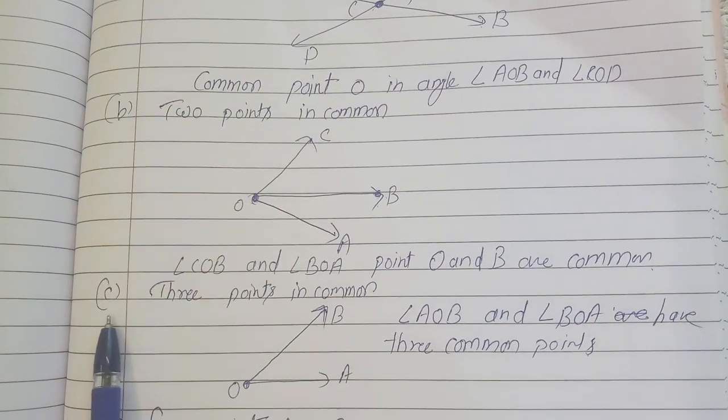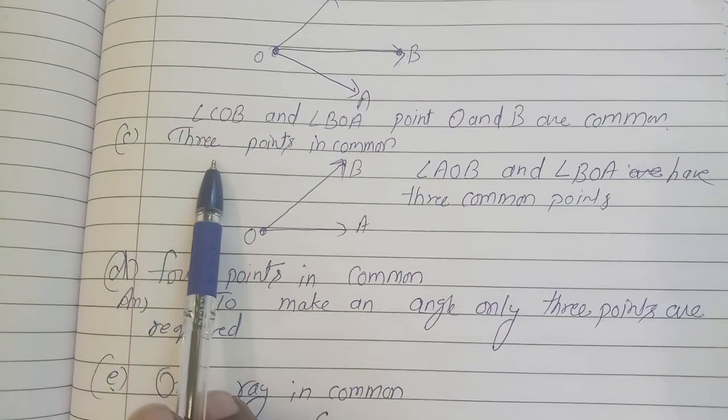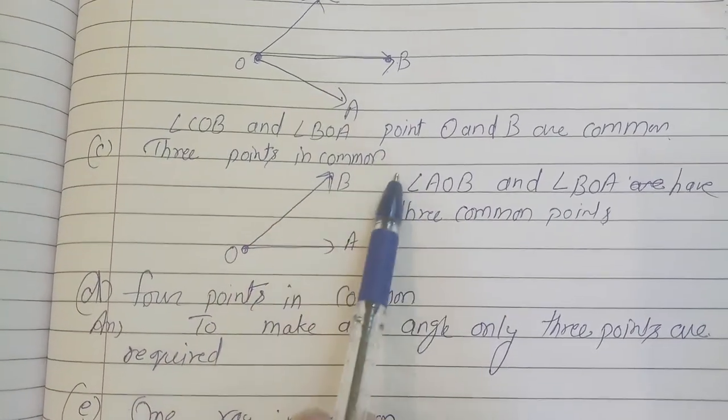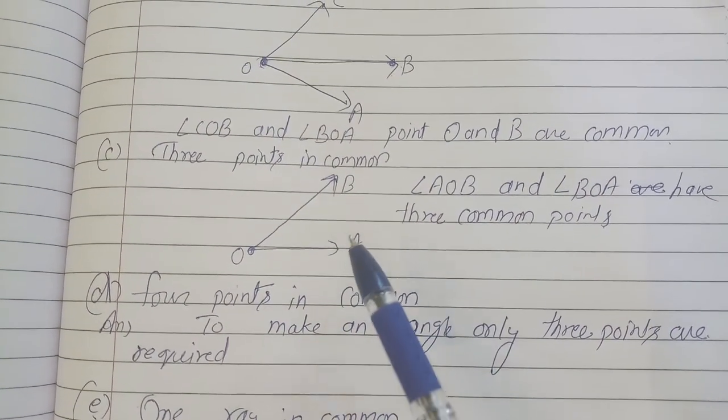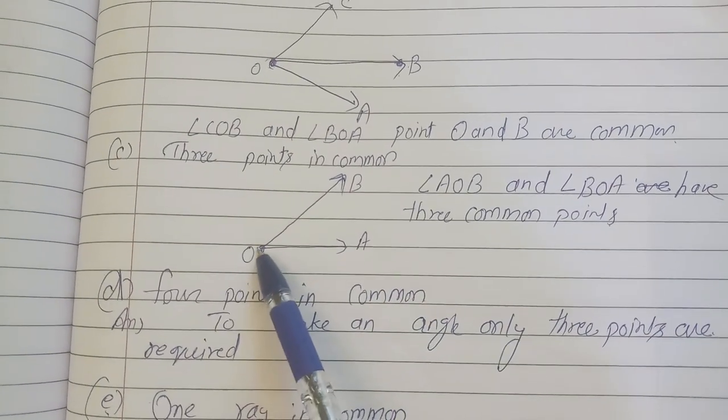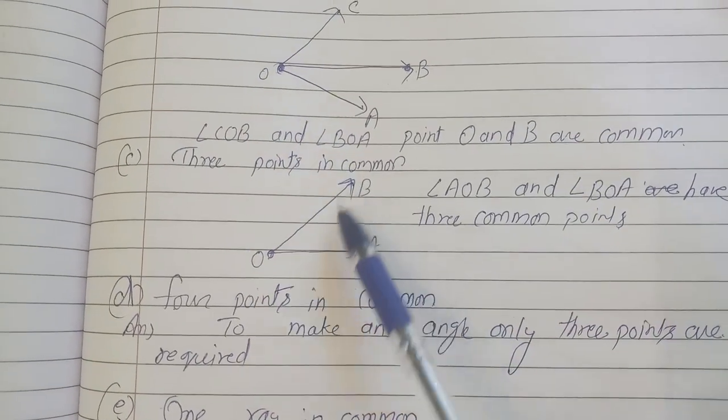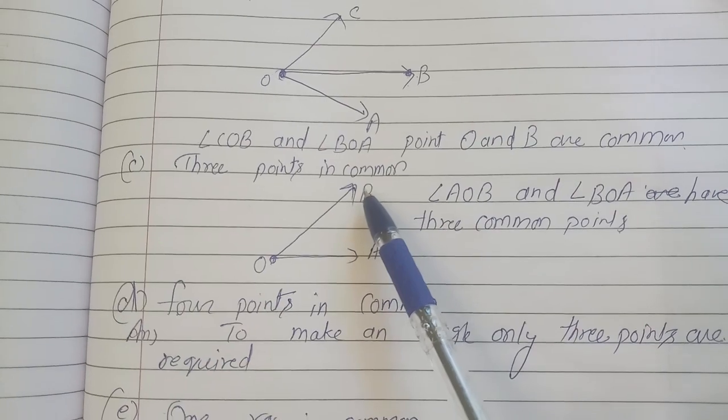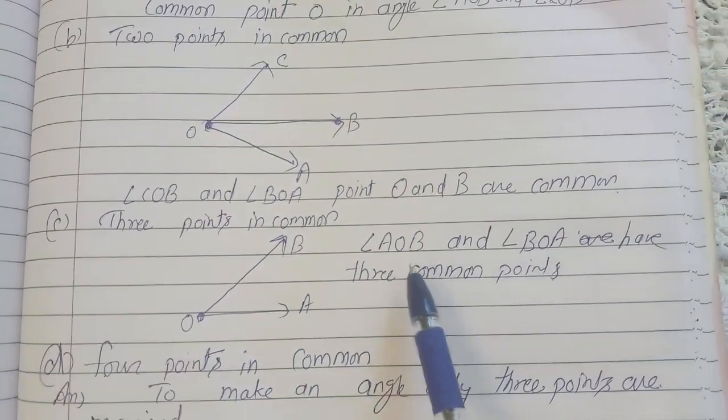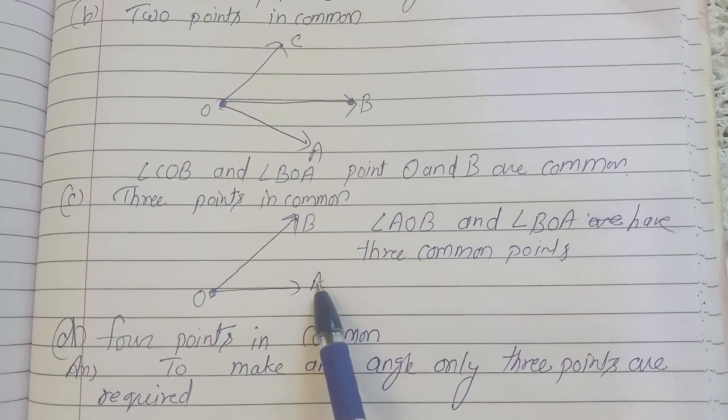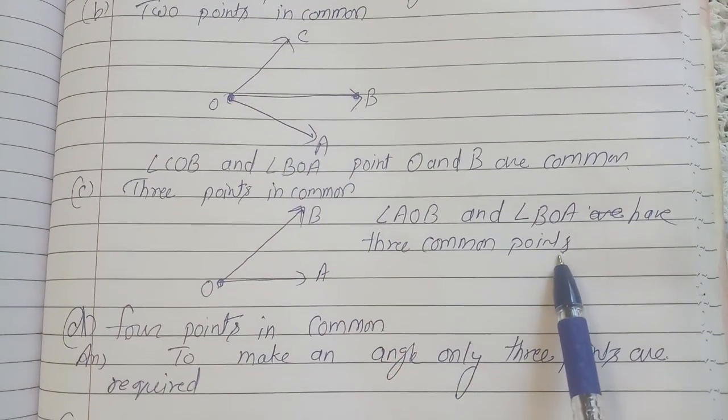That we have C question: three points in common. So three points basically - in every angle to make an angle we need three points. One is generating point and that OB ray and OA ray. So we have a point BOA, so angle BOA and similarly that angle AOB. So we have that all three points are common.